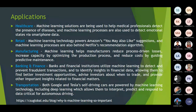In transportation, both Google and Tesla self-driving cars are powered by machine learning technology, including deep learning, which allows them to interpret, predict, and respond to data critical for autonomous driving. These cars are designed with artificial intelligence strategies and equipped with machine learning and deep learning algorithms. There are many other applications in transportation that we will explore when discussing these applications in detail.